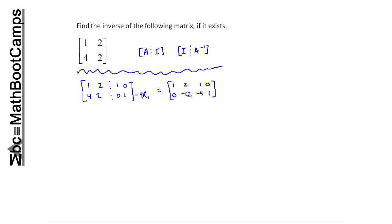Okay, the next step is I want this value right here to be a one, and so the way I can get that to be a one is by multiplying by minus one over six. And so I do this and I end up with one, two, one, zero, and zero, one.